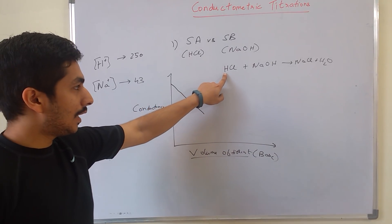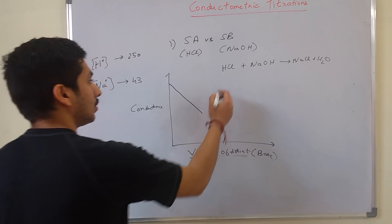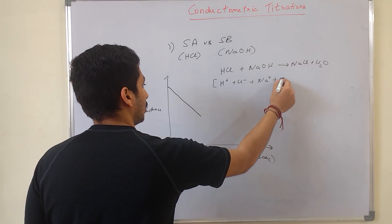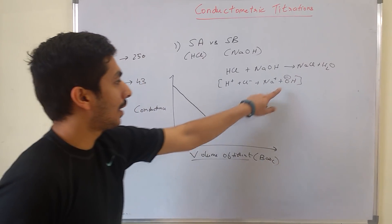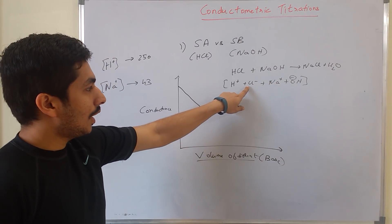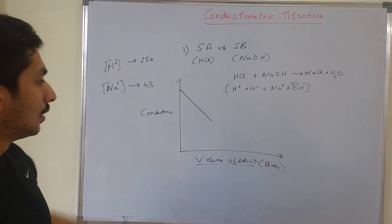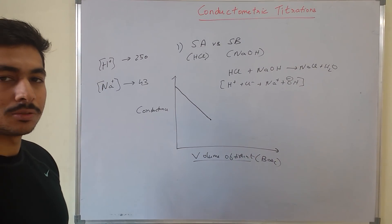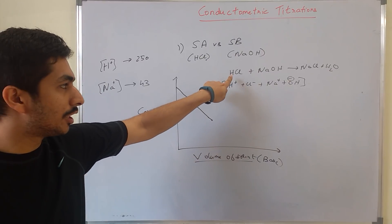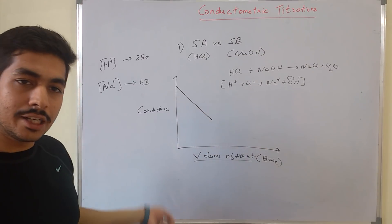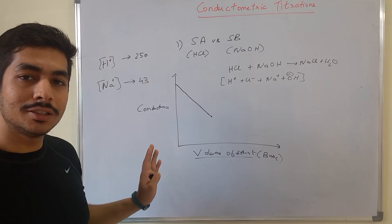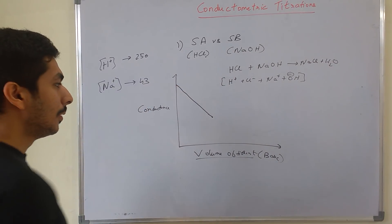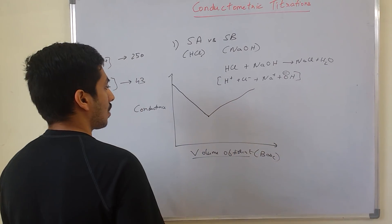In the neutralization reaction, H⁺ is combining with OH⁻ to form water, and Na⁺ and Cl⁻ remain in solution as NaCl. The conductance decreases and keeps decreasing up to a particular point — the equivalence point — where complete neutralization takes place, meaning all the H⁺ dissociated by HCl has been neutralized by OH⁻. If you keep adding base beyond this point, the OH⁻ concentration increases, and the conductance begins to rise again.